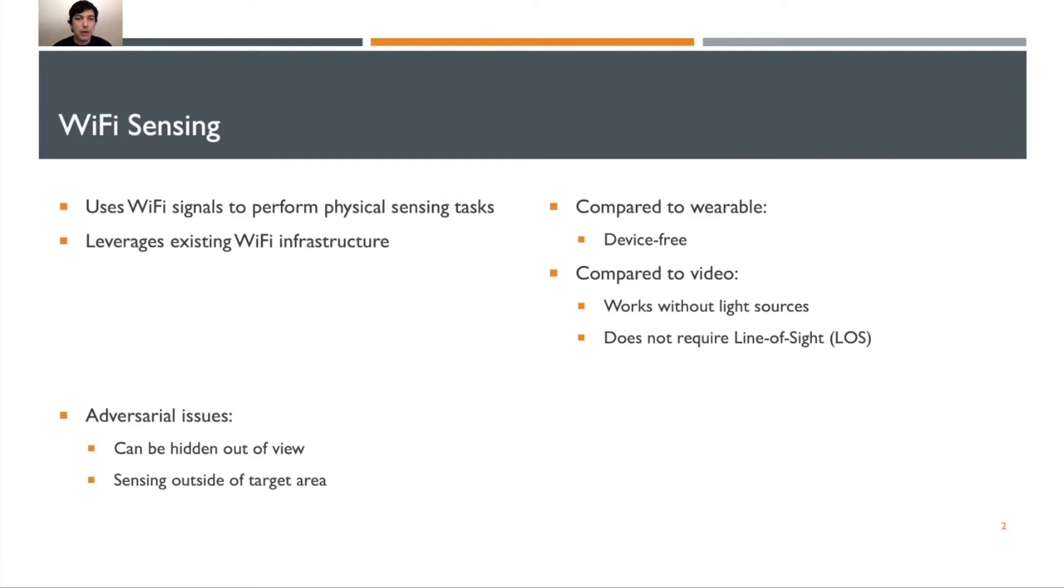Compared to video, Wi-Fi sensing works without any light sources. It also does not require a line-of-sight view into the target area because Wi-Fi signals bounce off of everything omnidirectionally.